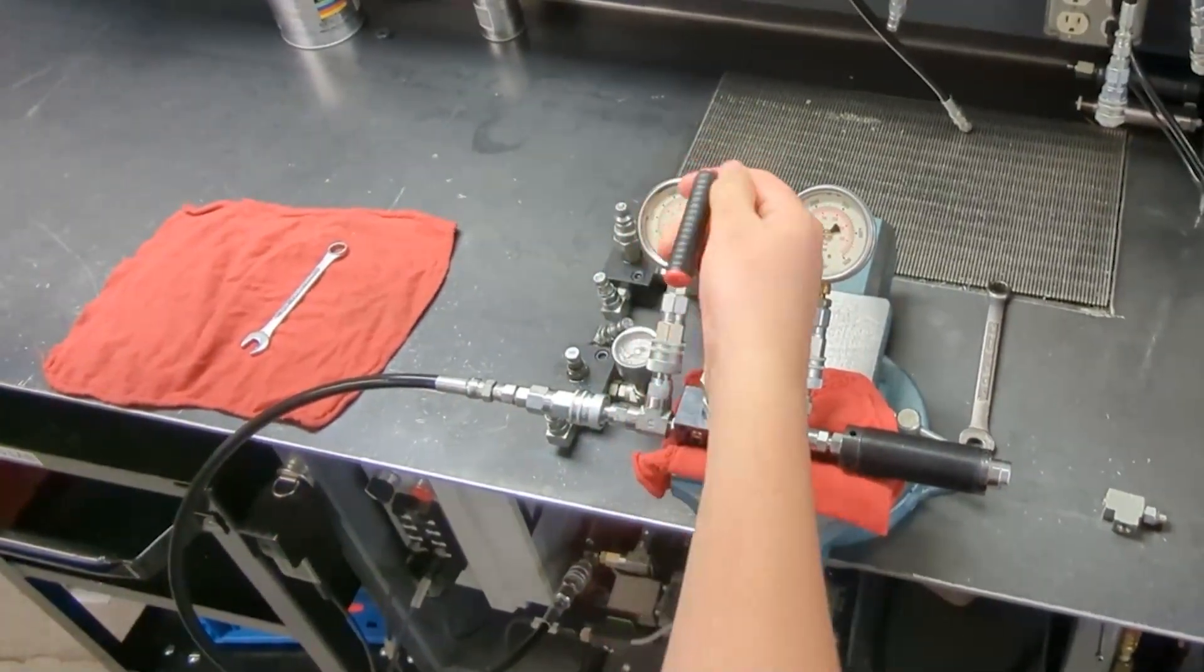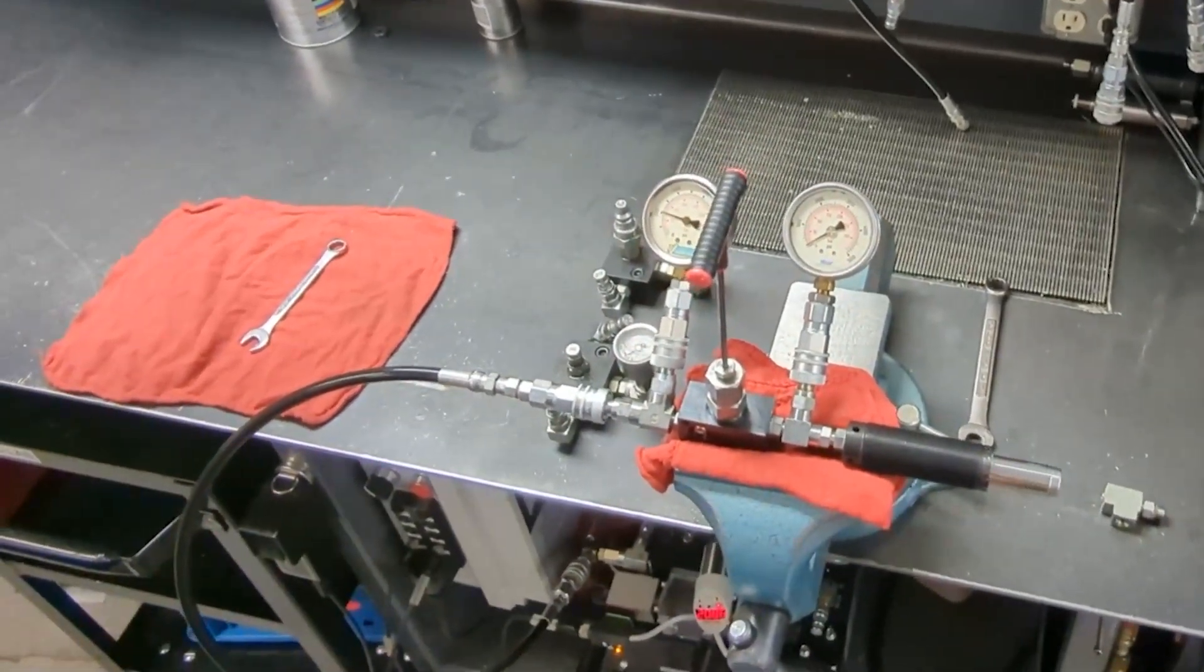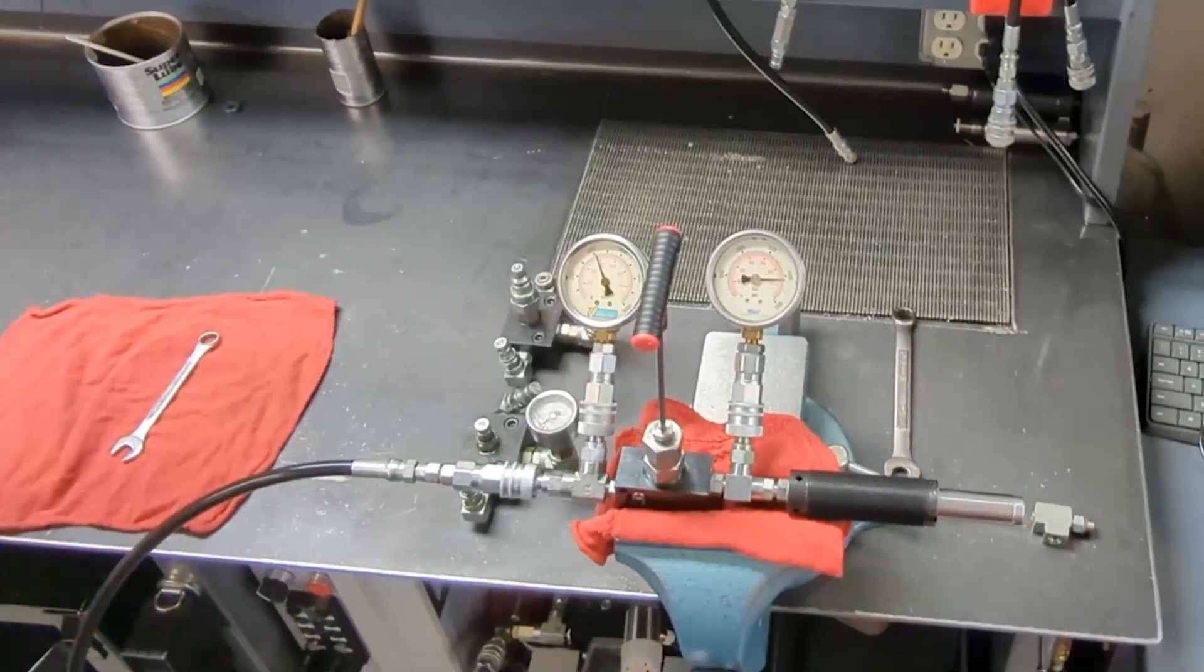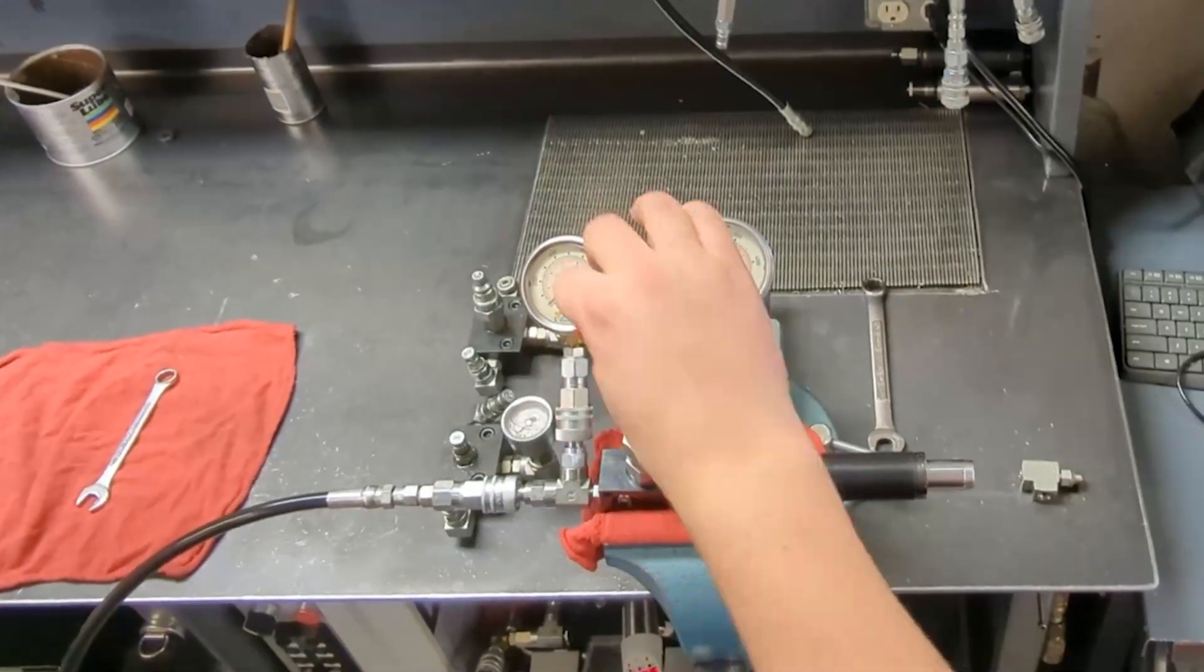The other method is an iterative process. You back the screw out, pressurize it, note the set point as the cylinder is moving, and then readjust.